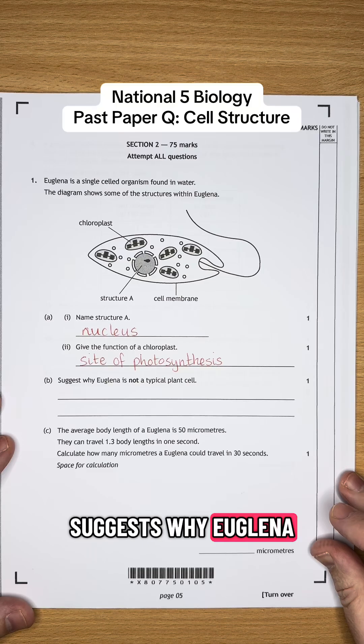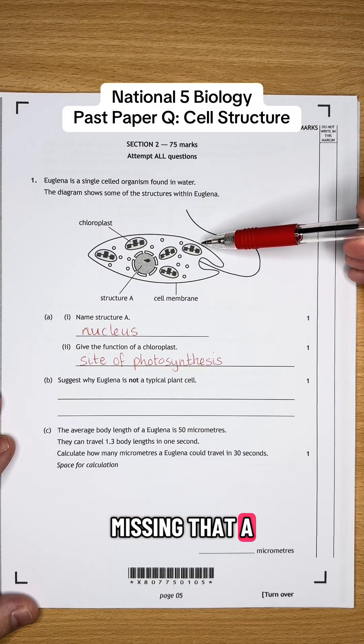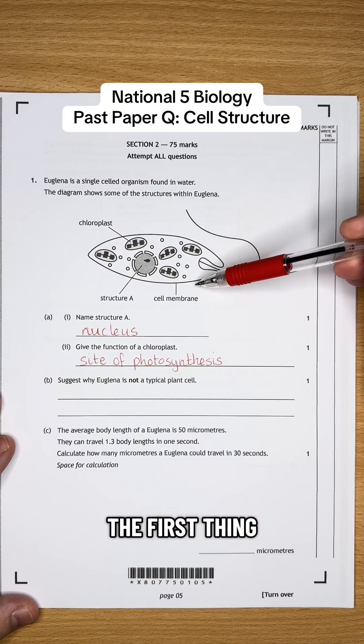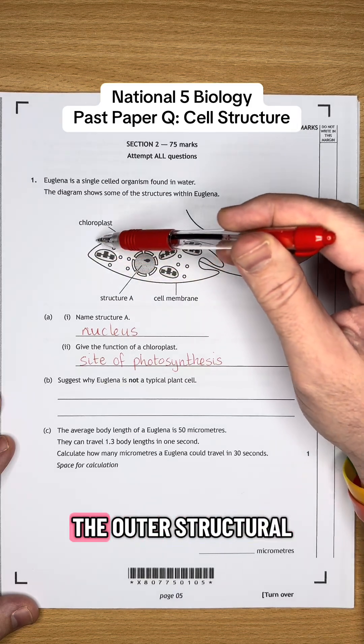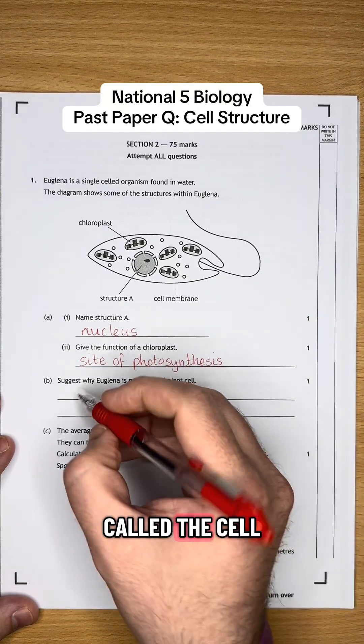B suggests why Euglena is not a typical plant cell. Well, if we look at the Euglena, what is it missing that a typical plant cell would have? The first thing that I see here is it doesn't have the outer structural ring around it called the cell wall.